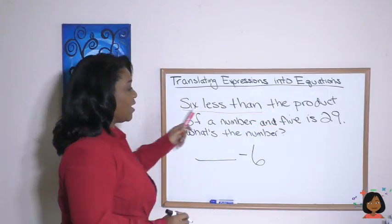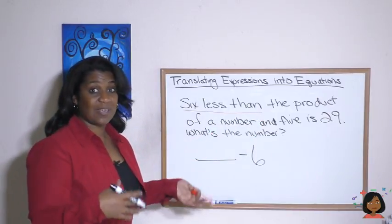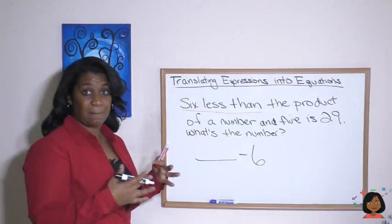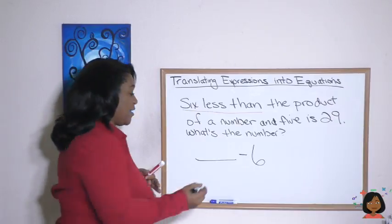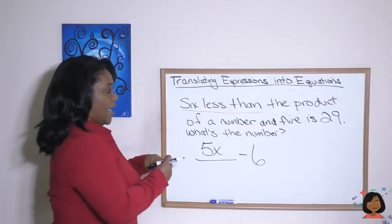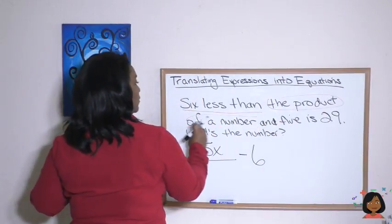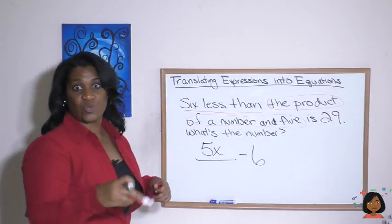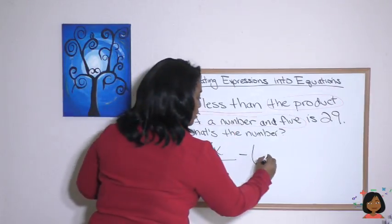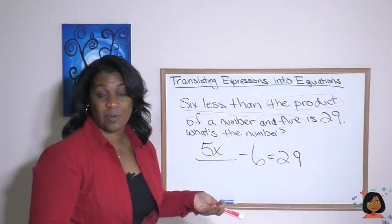The product of a number and five. We don't know what the number is, so we'll call it X. The product of a number and five means that number X multiplied by five. So we're going to just call that five X. And that was this piece. Is 29. And we know that is means equal to in math.